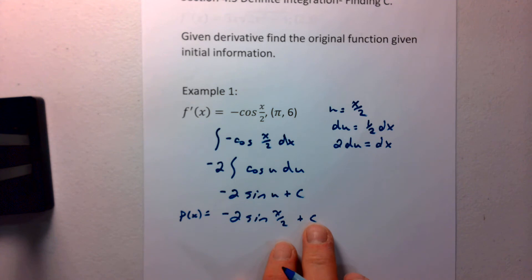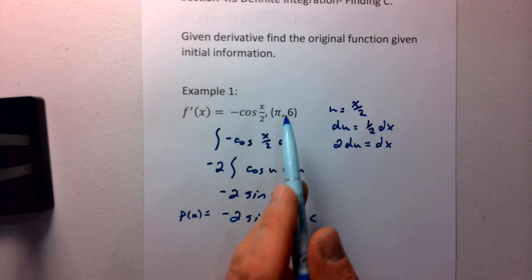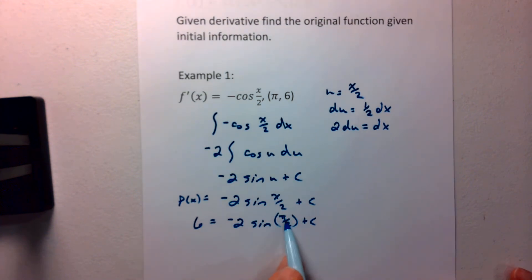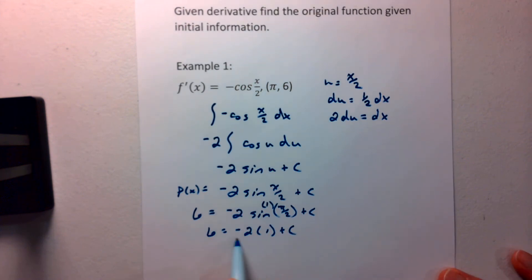We can find that c value because we know the x value is pi over 2, and the y value is 6. So that gives us 6 equals negative 2 times the sine of pi over 2 plus c. The sine of pi over 2 is 1. So 6 equals negative 2 times 1 plus c. Go ahead and add your 2 over. So we end up with 8 equals c.